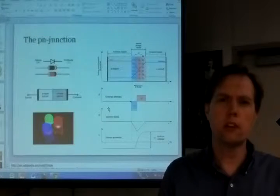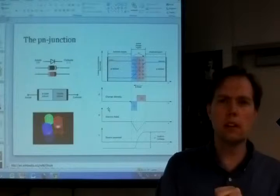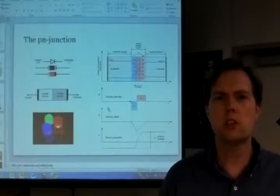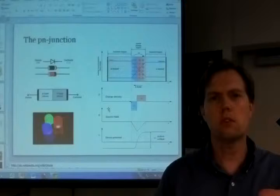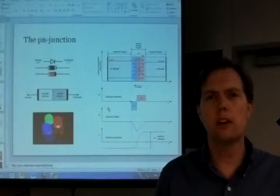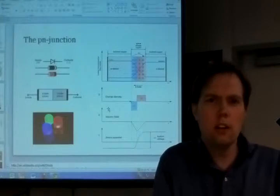Boron has three electrons, so you swap a silicon atom with a boron atom and you have a situation where the substrate, the way the electrons are patterned in the crystal, there's a little hole there.